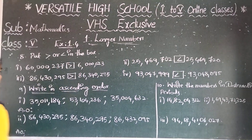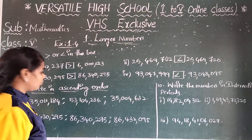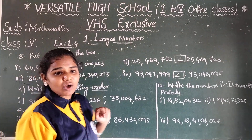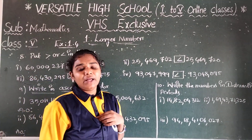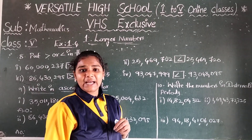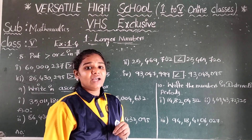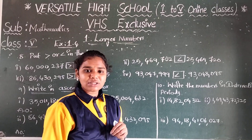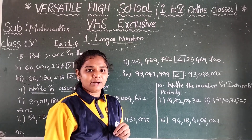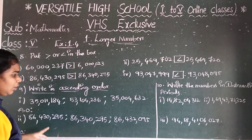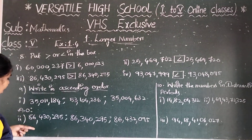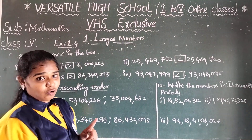Next bit, number nine: write in ascending order. Ascending order means arranging numbers from the smallest to the biggest. Three problems are given; I will do two problems and the remaining one is homework.